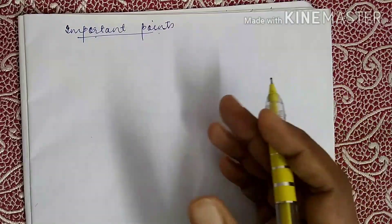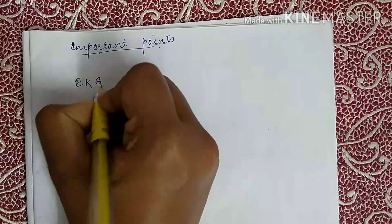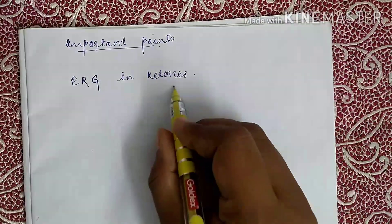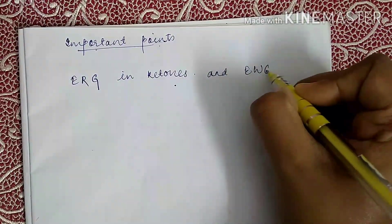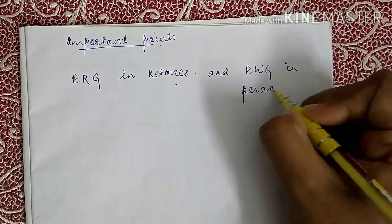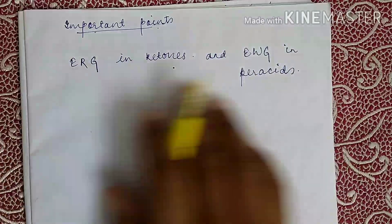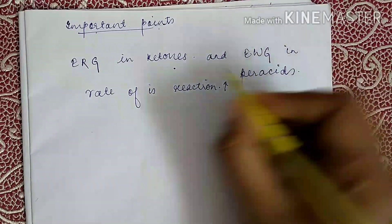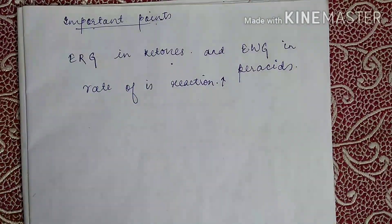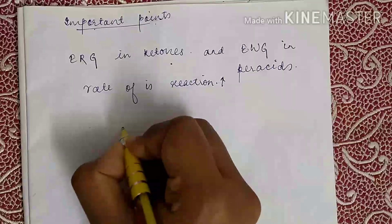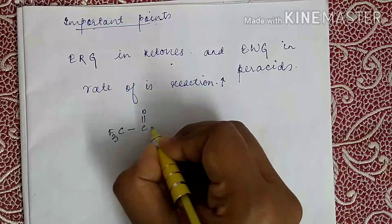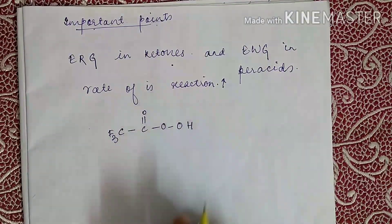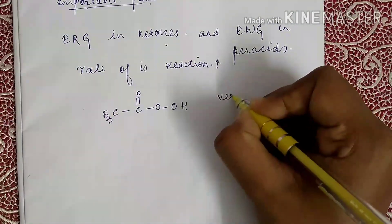Specifically, if any electron-releasing group is present in the R group of the ketone (the reactant), and if any electron-withdrawing group is present in the R group of the per acid, then the rate of the reaction is accelerated. If we use pertrifluoroacetic acid, that is CF₃-C(=O)-OOH, the reaction also takes place at a faster rate because it is a very good leaving group.